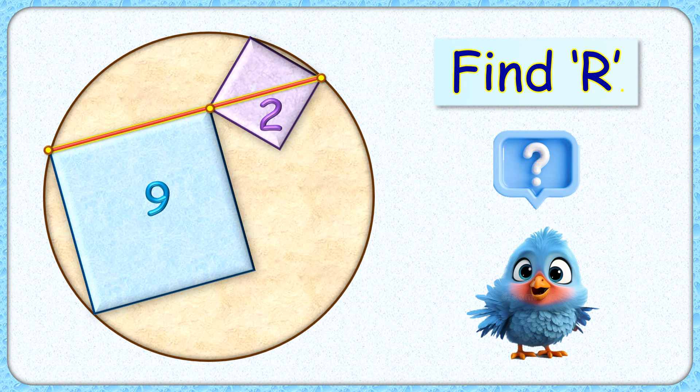Welcome everyone to this interesting question. We are given two squares of area 9 and 2 centimeter square. They are inside a circle such that the side of one of the square and the diagonal of the second square lie in a straight line. The exciting part is with this limited data we have to find the radius of the circle.